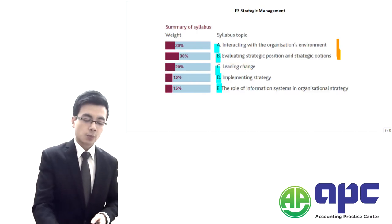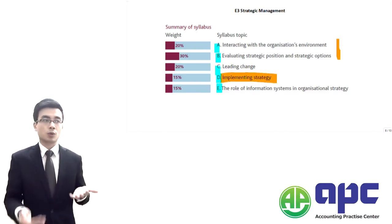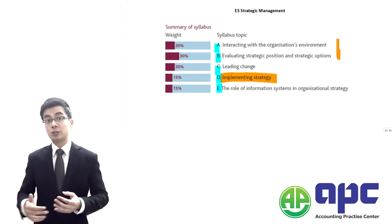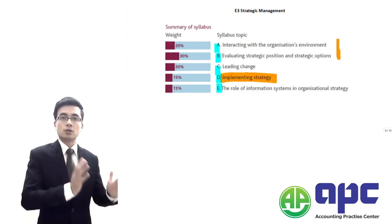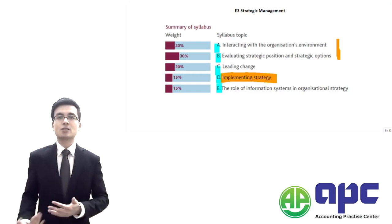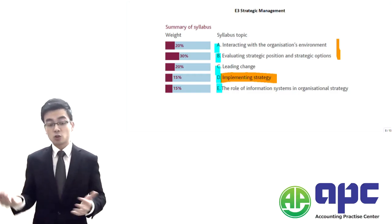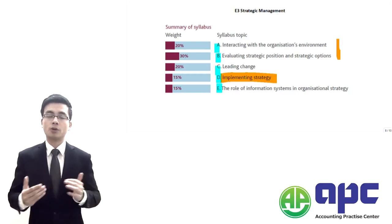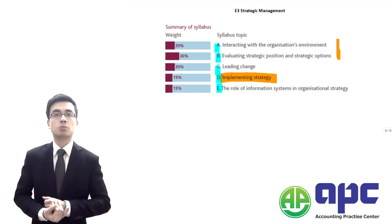Section D is where we're going to implement strategy. Again, this relates to operational strategy, but we think about how we're going to put marketing campaigns, human resource management, and knowledge management into practice to ensure that corporate and business strategies can be successfully implemented.